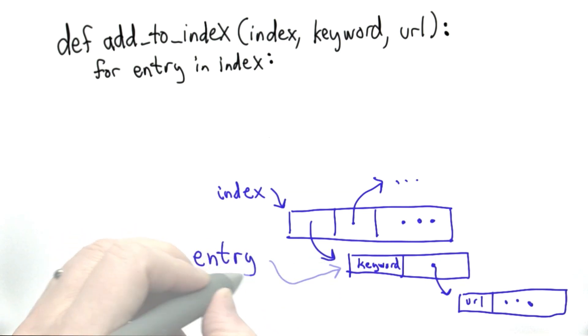So the first time through the loop, the value of entry will be a reference to the list here, which is the first element of the index list. Now we need to find the keyword. The keyword is right here. That's the element at position zero of entry.